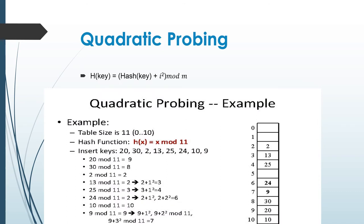Next is quadratic probing. Here we use the formula h(key) = (hash(key) + i²) mod m, where m is the table size and i is a value 0, 1, 2 up to infinity. The table size is 11. 20 mod 11 equal to 9, so 20 is placed at key value 9. 30 is placed at key value 8. 2 is placed at key value 2. 13 should be placed at key value 2, but we can't because already 2 is placed. So by using the formula: 2 + 1² = 3, so 13 is placed at key value 3.